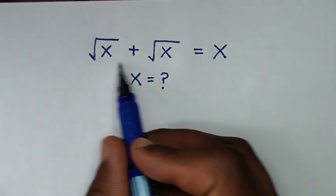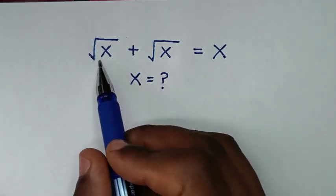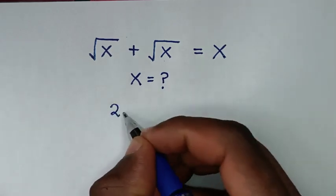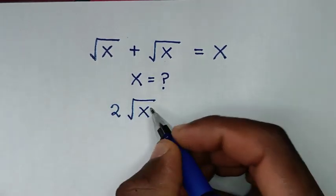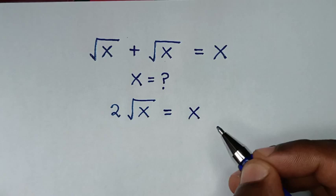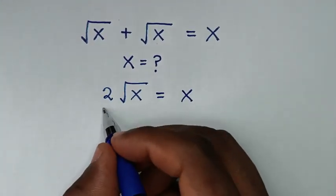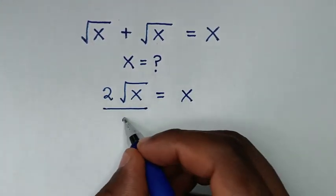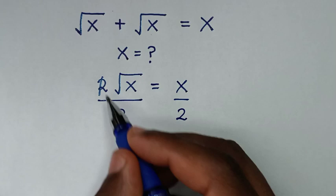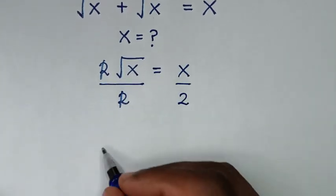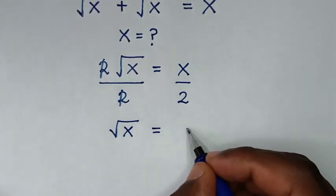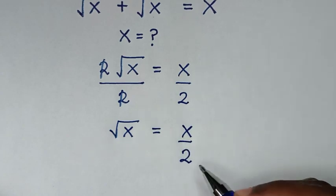Now first, from the left side, square root of x plus square root of x is 2 square root of x, which is equal to x. In the next step, we'll divide by 2 on both sides, so these 2s will cancel, and it will be square root of x is equal to x over 2.